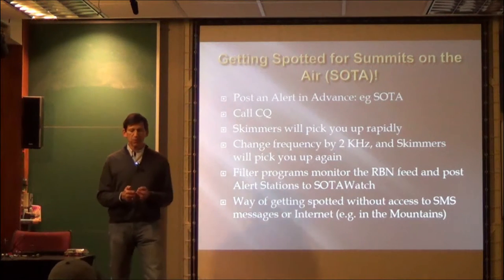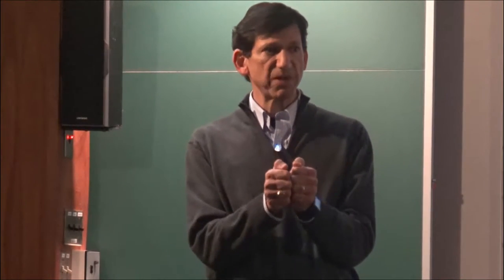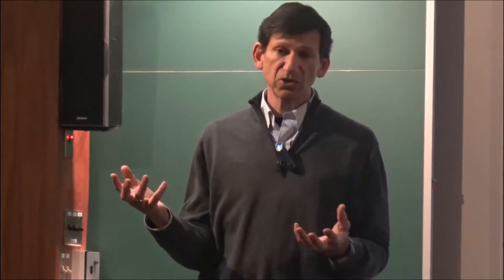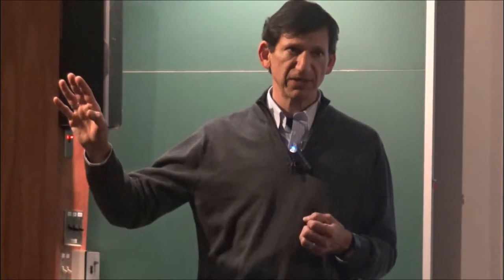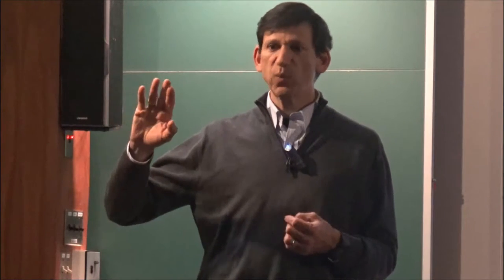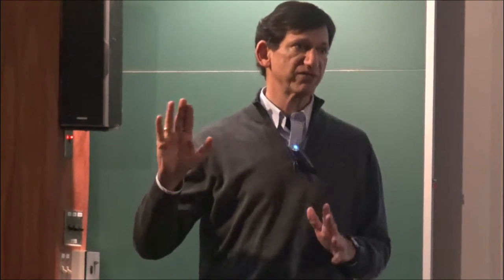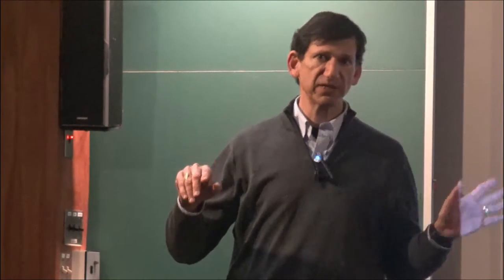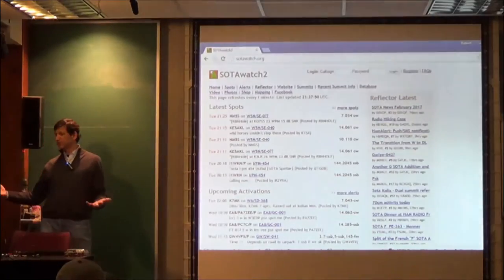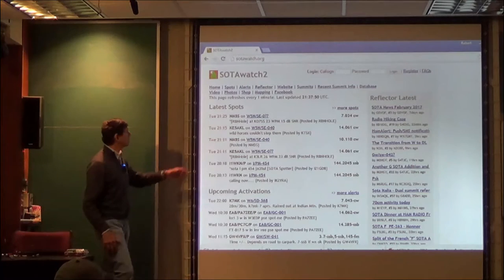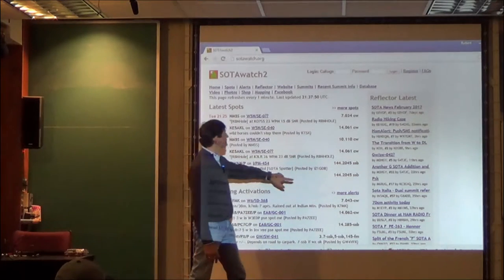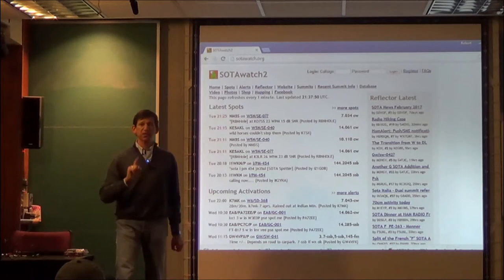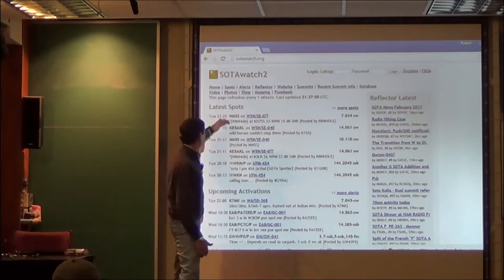Now, as I described, there's a filter program that monitors the reverse beacon network feed and posts people who have made alerts. And it's a way of getting spotted without access to either SMS or internet. There's somebody else who wrote a program where even if you don't have internet, you could send your own spot via an SMS message. Occasionally, you won't have a 4G signal but you might have a telephone signal. I gave up on cell coverage in the Shenandoah. I mean, forget it. I mean, when weather conditions are not good, I don't want to get on frequency and wait for 20 minutes for the first person to spot me. I use the reverse beacon network. And this is what the SOTA website looks like. So if you go to sotawatch.org, basically you'll see upcoming activations. So you can click on that and when you click on more alerts, there's a little link there that says post an alert. So that's when you post yourself. And then here are the DX spots.